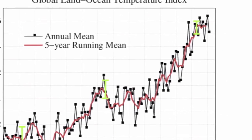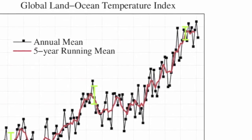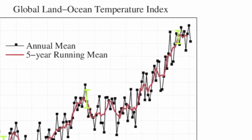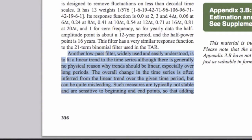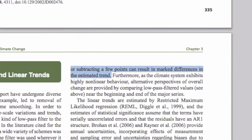That these trends can be misleading is exactly what the IPCC says in the very chapter where they show the chart for the first time. Another low-pass filter, widely used and easily understood, is to fit a linear trend to the time series, although there is generally no physical reason why trends should be linear, especially over long periods. The overall change in the time series is often inferred from the linear trend over the given time period, but can be quite misleading. Such measures are typically not stable and are sensitive to beginning and end points, so that adding or subtracting a few points can result in a marked difference in the estimated trend.